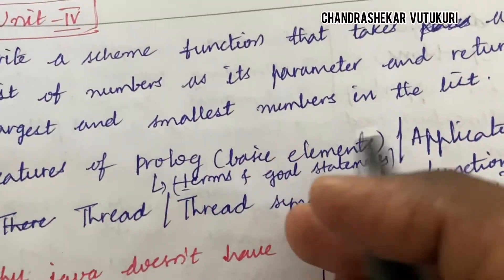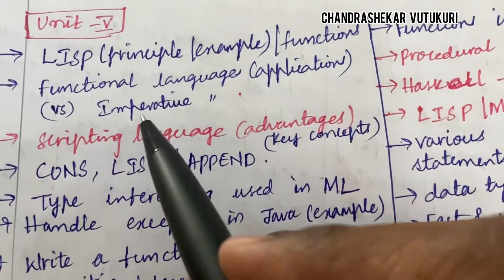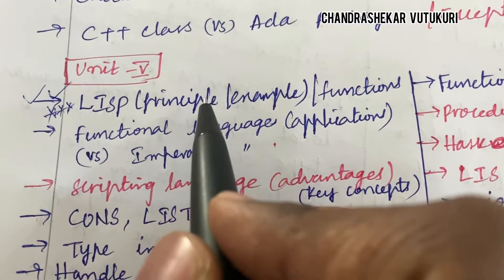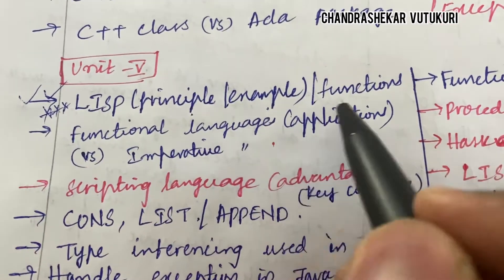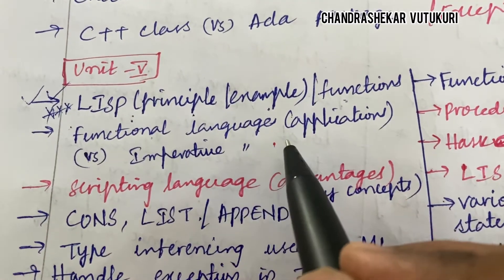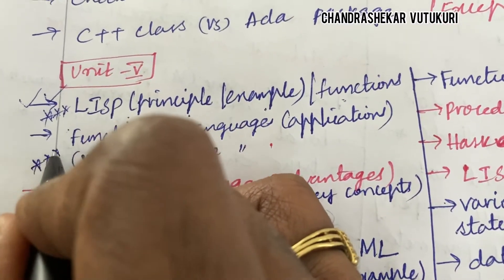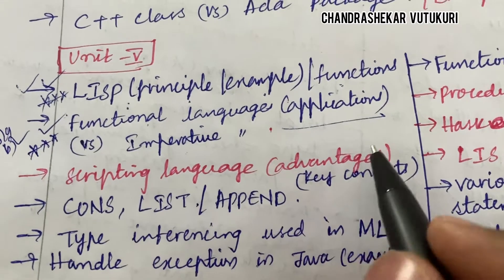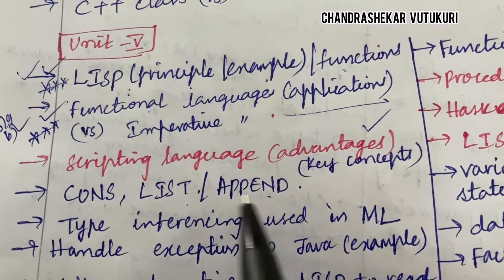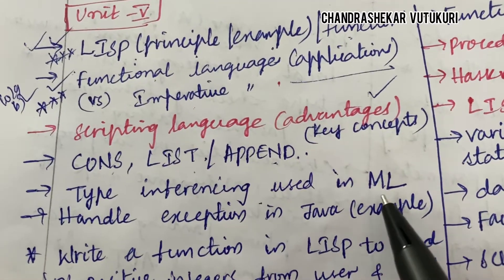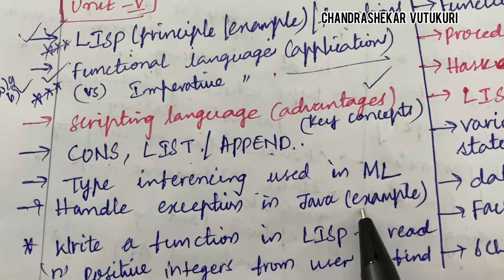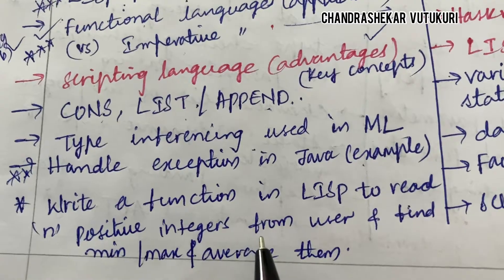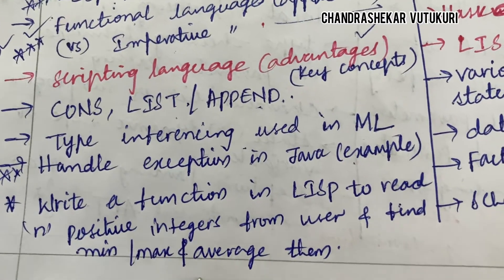Unit 4 is also lengthy, but before going to Unit 4, let me cover Unit 5 first. List is said to be a definite sure question — a program or function needs to be written related to it, including the principles, examples, and functions of list. Functional languages versus imperative languages is a topmost question, possibly for 10A/B or 11A/B. Applications of scripting languages, advantages, and the list and append functions with their differences should be worked out. Type inferencing used in ML and handling exceptions in Java along with an example is also a sure question — for example, write a program in Lisp to read positive integers from the user and find minimum, maximum, and average.